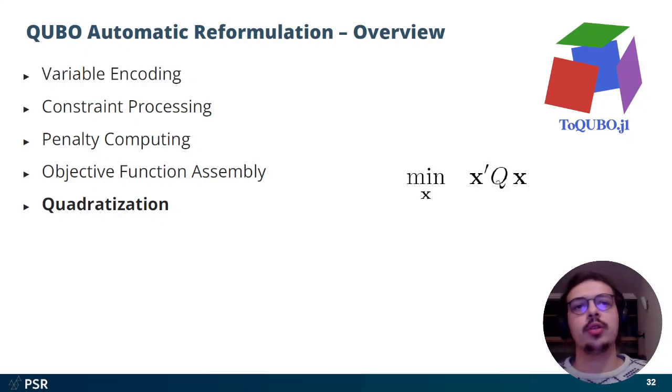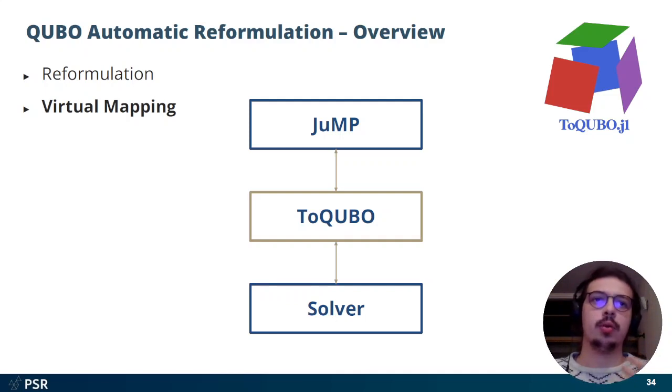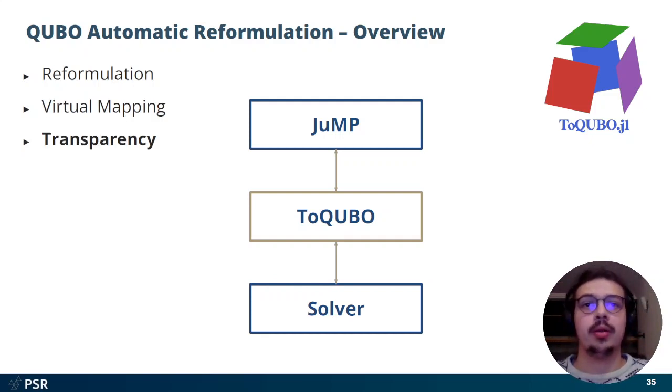It performs this reformulation using a virtual mapping mechanism, which allows for the package to keep track of the source and the target structures, and perform basic Jump queries, and also return results and all that kind of stuff. And that happens in a transparent manner. The user doesn't even notice what's going on. When the results are returned, for example, it appears as if you were using a regular solver.